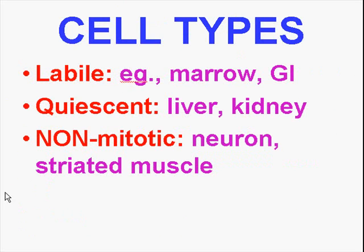Certain cells regenerate faster than others. Cells such as bone marrow granulocyte precursors have a turnover of just a couple of days, so they're very labile. GI mucosal cells are also very labile. Cells such as liver and kidney turn over, but not very much. And neurons and striated muscle don't turn over because they are not capable of mitosis. We'll continue in the next slide.